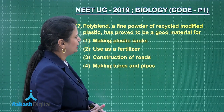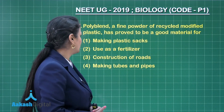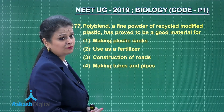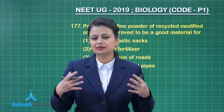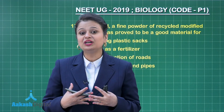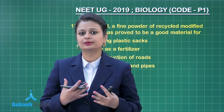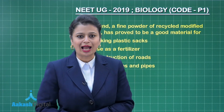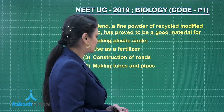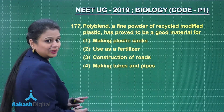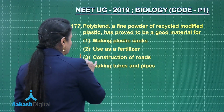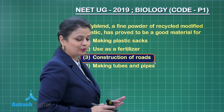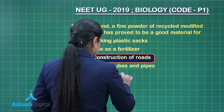Question 177. Polyblend, a fine powder of recycled modified plastic, has proved to be a good material for what? Polyblend is mixed with bitumen, which increases its water-repelling capacity, and this mixture can be used for laying down roads. So, the third option — construction of roads — is our answer here.